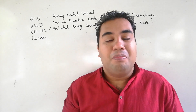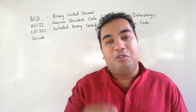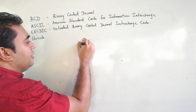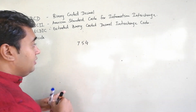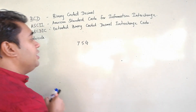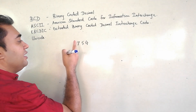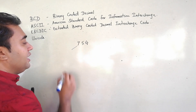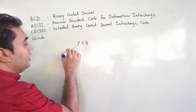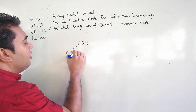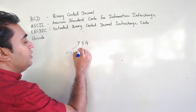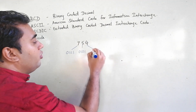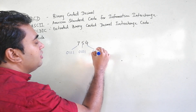In BCD we represent each digit using exactly four bits. Let me show you an example. Let's take the number 754. In this decimal number we represent each digit using exactly four bits: 7 is represented as 0111, 5 as 0101, and 4 as 0100.